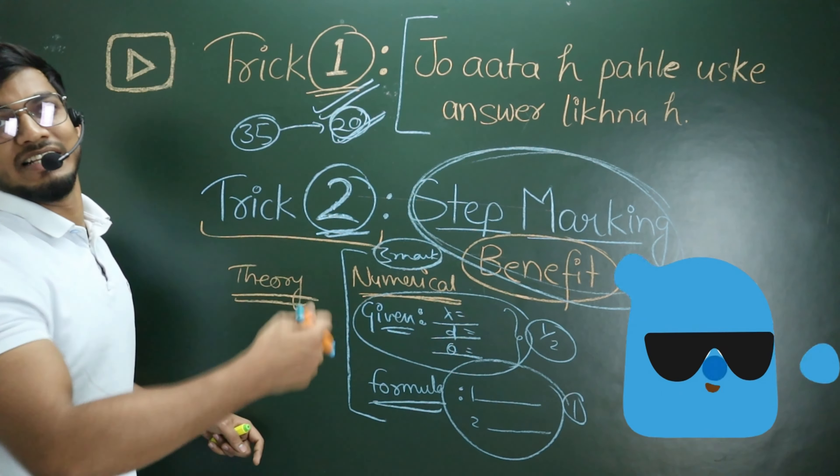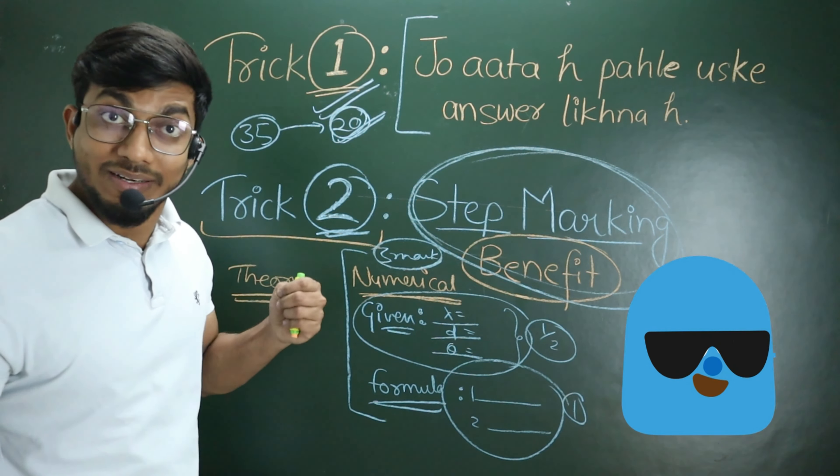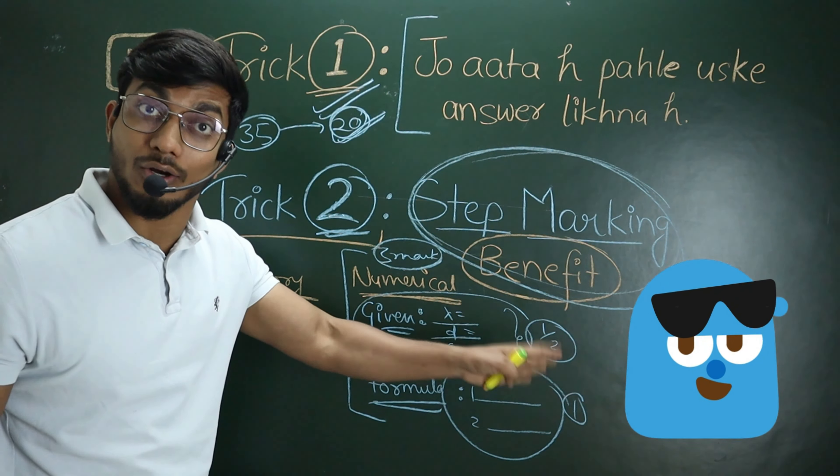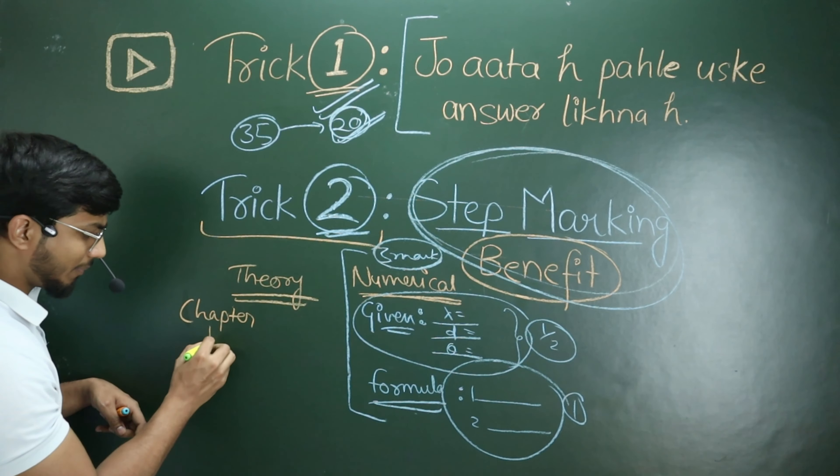The board gives step marking, and you need to take benefit of that. For example, if a question is worth 3 marks, you will get half the marks just for writing the given data, one mark for the formula, and the third mark for solving it. So don't leave any question blank — if you don't know the full solution, at least write the formula.